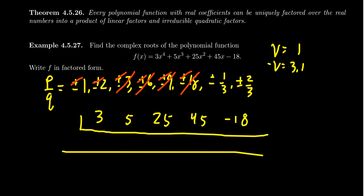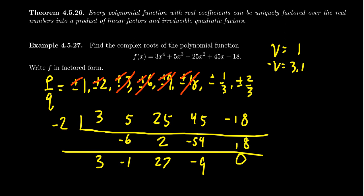Let's try x = −2. Bring down the 3: 3×(−2)=−6, +5=−1, ×(−2)=2, +25=27, ×(−2)=−54, +45=−9, ×(−2)=18, −18=0. We found a root! I understand this process can be a little frustrating because of all the guessing and checking, but using these techniques you can speed through it much faster.